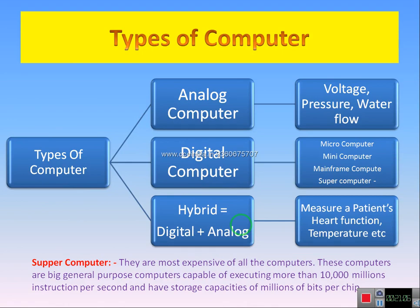Type of computer. There are three types: analog computer, digital computer, and hybrid computer. Analog means a number — there is a point that we have to press. Digital is a number or a point. Hybrid is a different computer. Hybrid is digital plus analog mixer called hybrid computer.